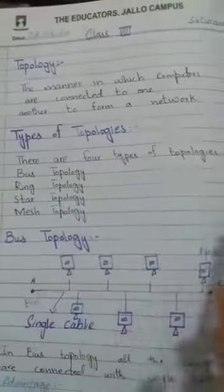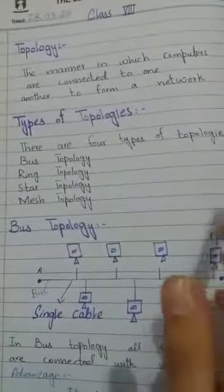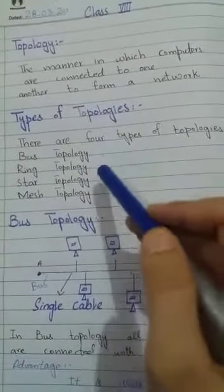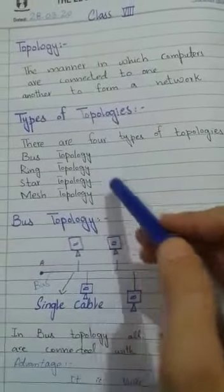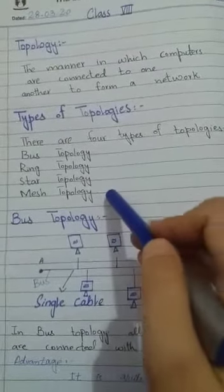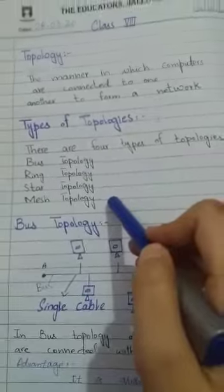There are four types of topologies: the first is bus topology, ring topology, star topology, and mesh topology.